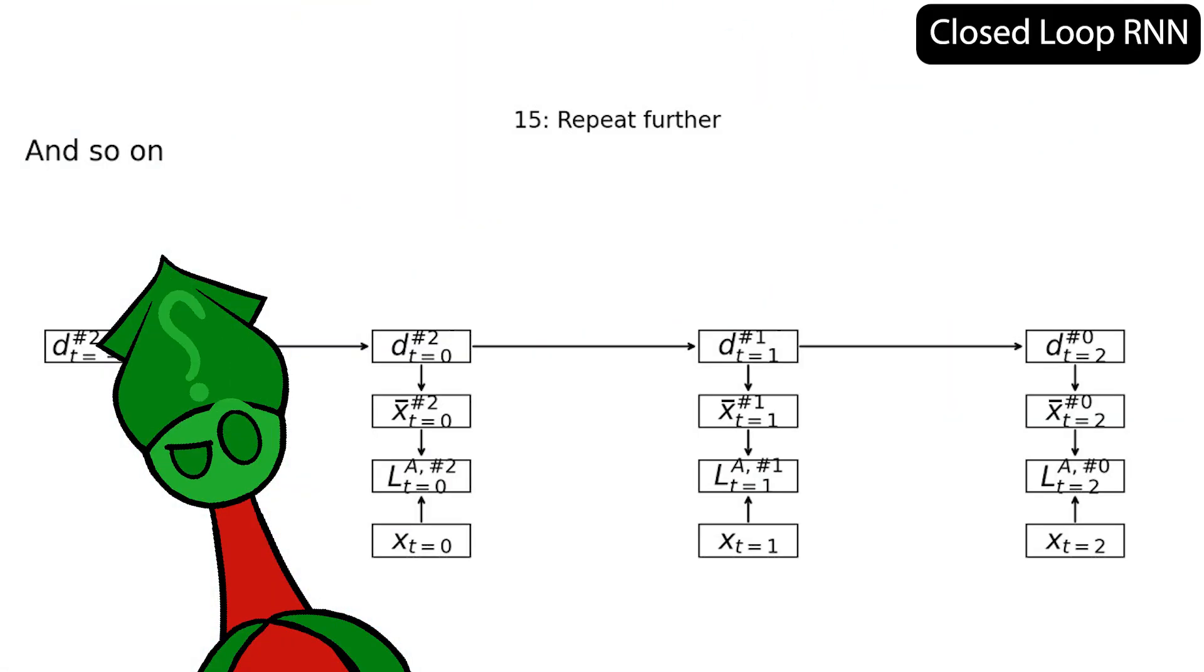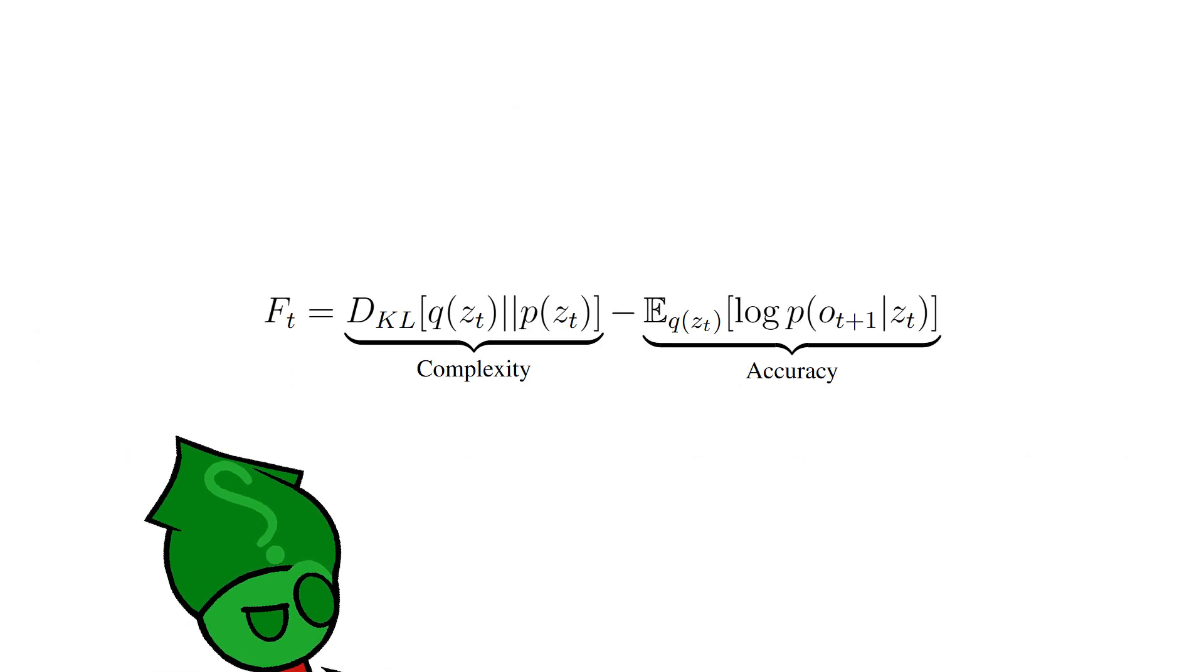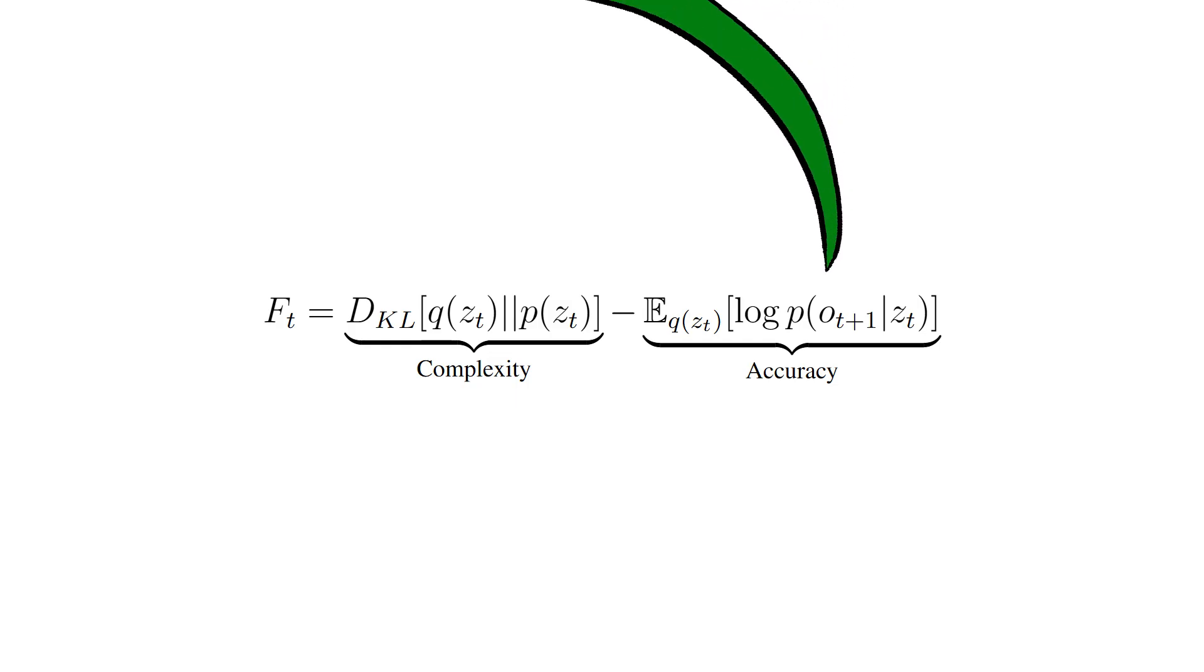You know what else models biological thought processes? Carl Fristen's free energy principle. This closed-loop RNN is trying to maximize accuracy. The free energy principle says that's not our only goal. We actually want to minimize free energy, which means maximizing accuracy and minimizing complexity. That means minimizing the difference between prior worldviews and posterior worldviews. We don't want new information to surprise us.